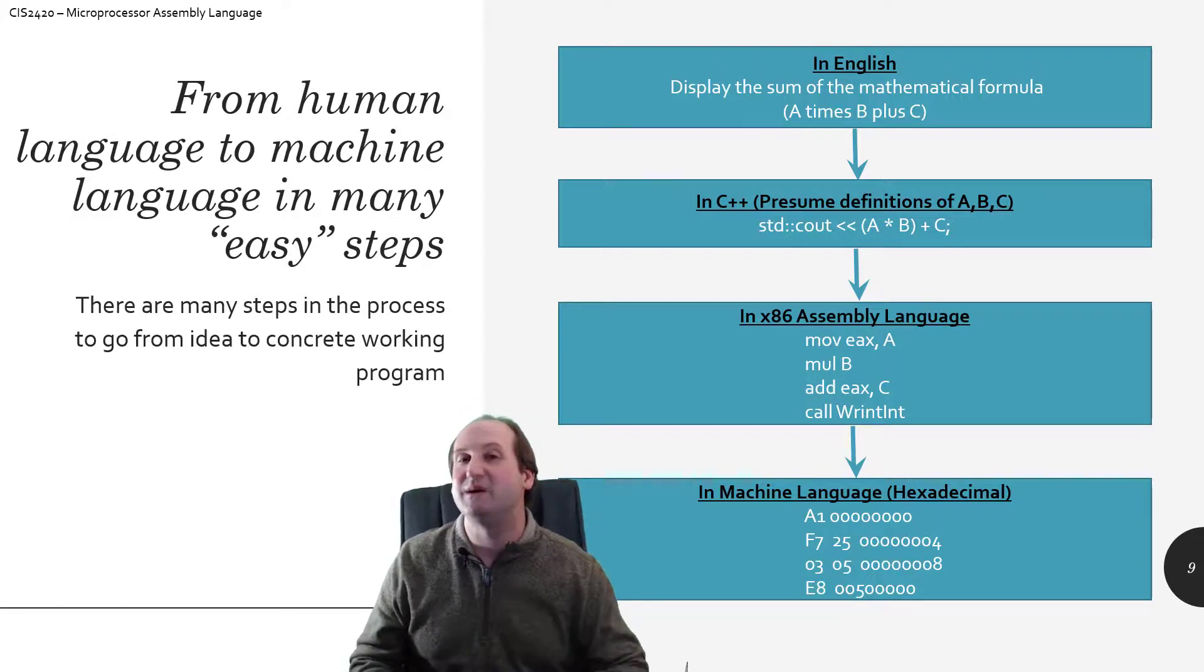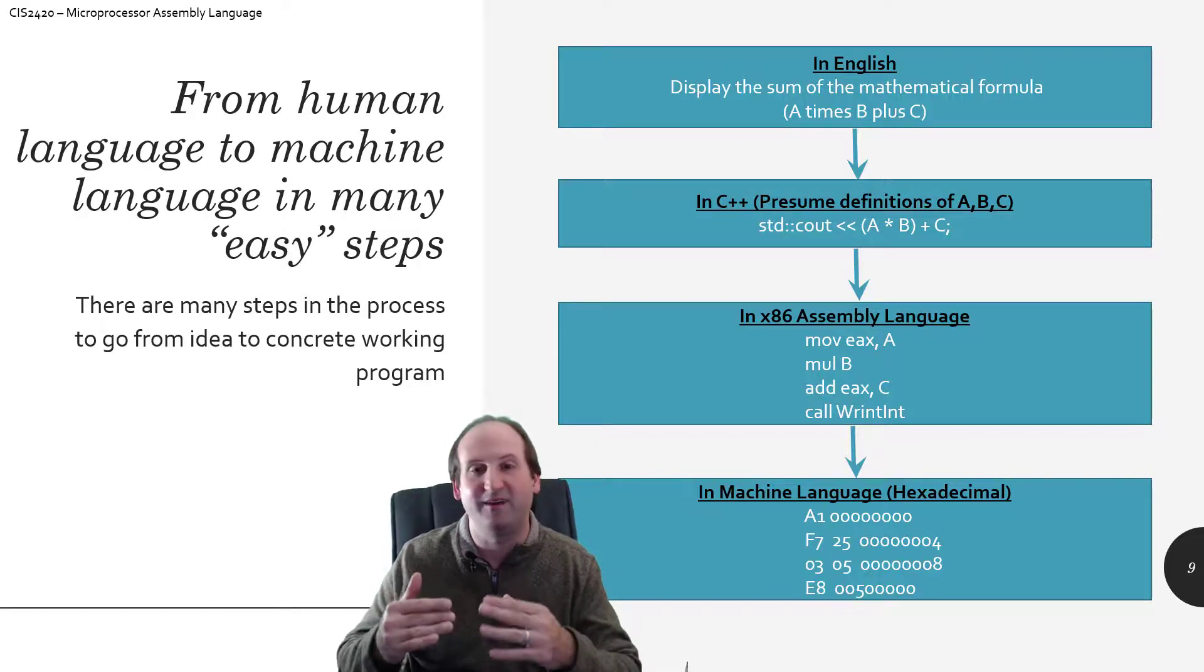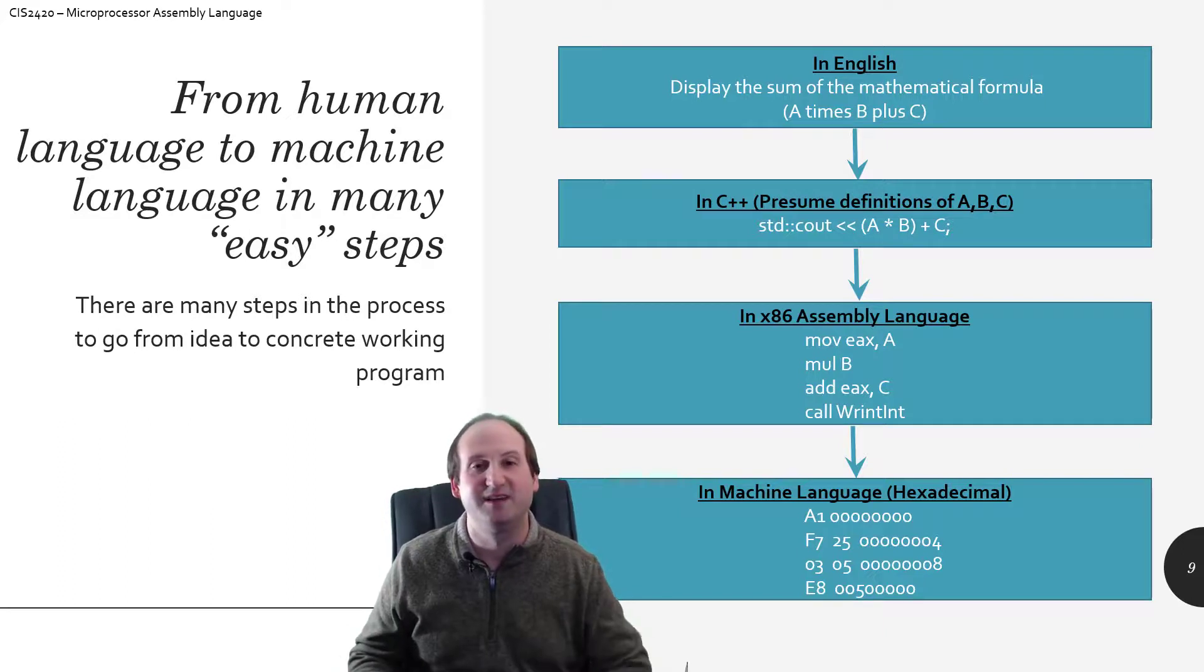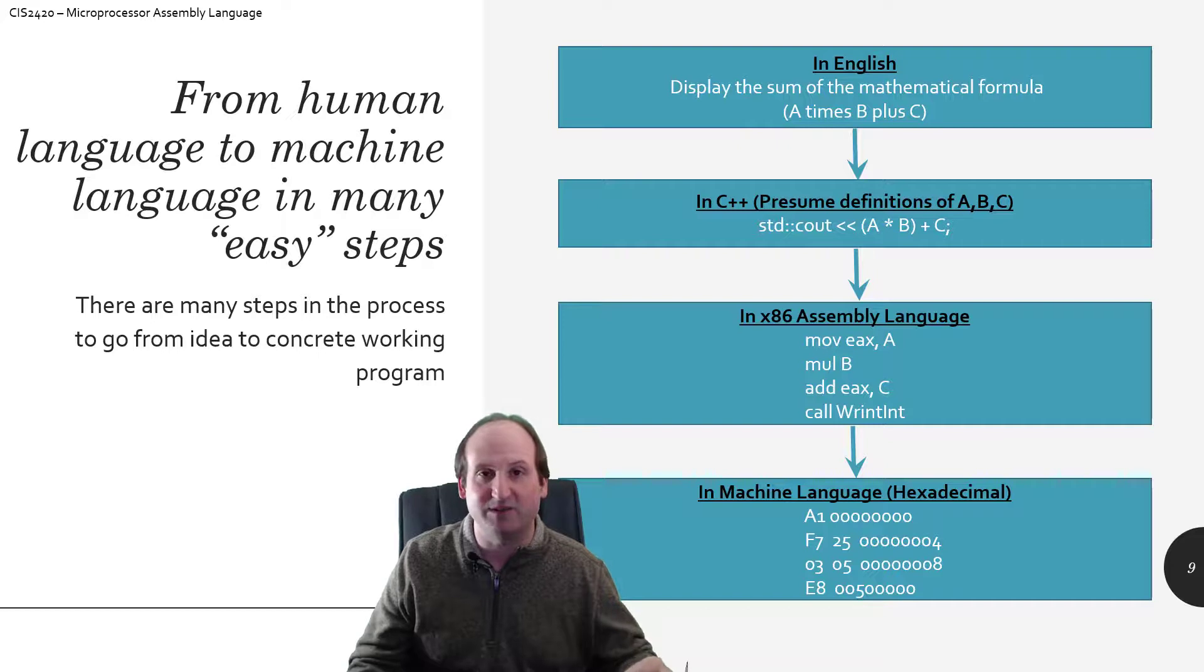So you're not going to be able to think this way, you're going to have to break down that one thought and be more tedious and come up with the order of operations of the four or five or ten things that this one line of code is going to execute. So this is a one-to-many relationship. One line of high-level language code almost always produces more than one line of assembly language code.